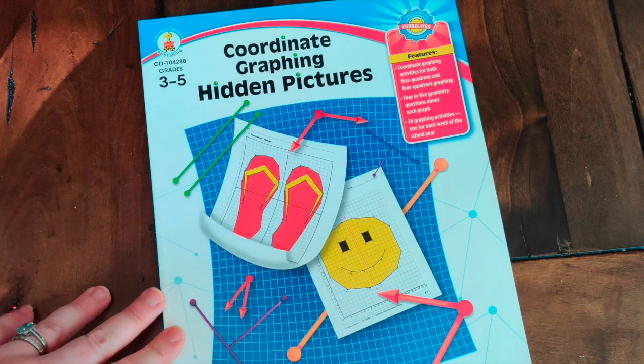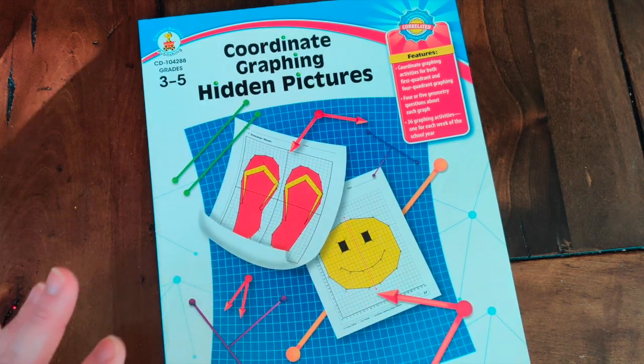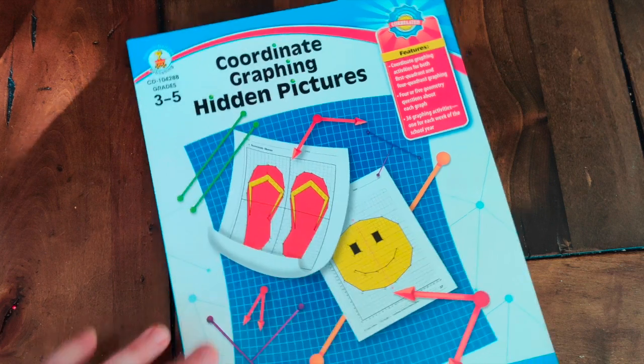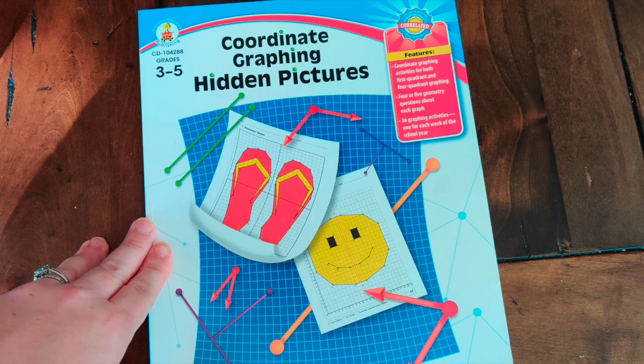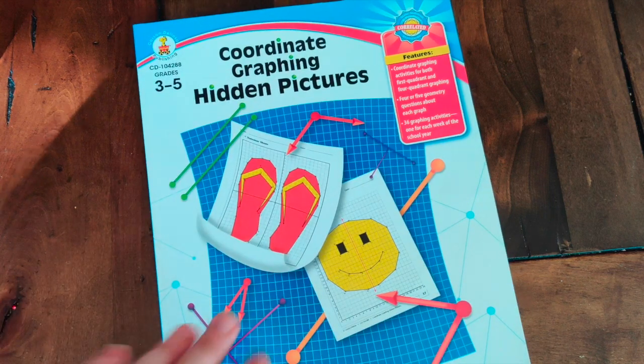It is a Coordinate Graphing Hidden Pictures workbook for grades three through five and it has activities for both first quadrant and four quadrant graphing, four or five geometry questions about each graph and 36 graphing activities, one for each week of the school year.